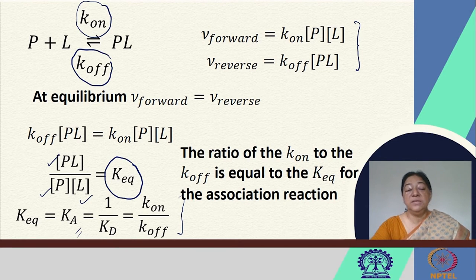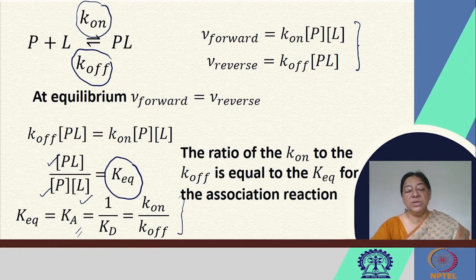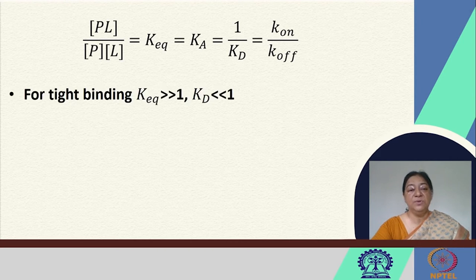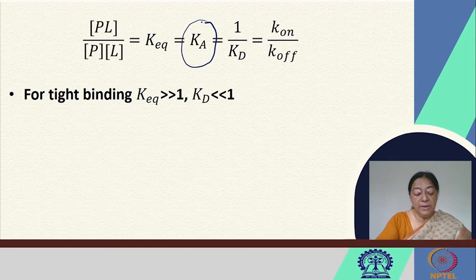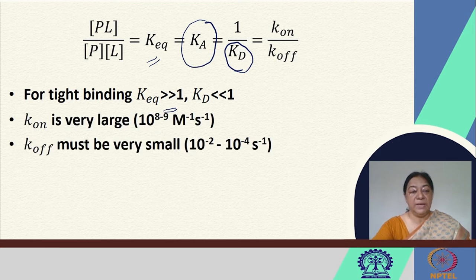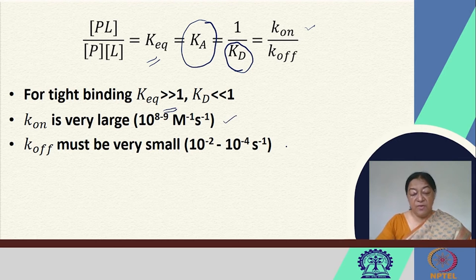When determining the thermodynamics of a protein-ligand binding system, we must determine the association constant and ensure the reaction has reached equilibrium. Ka is the inverse of KD and is equal to Kon divided by Koff. For tight binding, Ka should be much greater than 1, indicating a very low KD value. This means Kon must be very large while Koff must be very small.